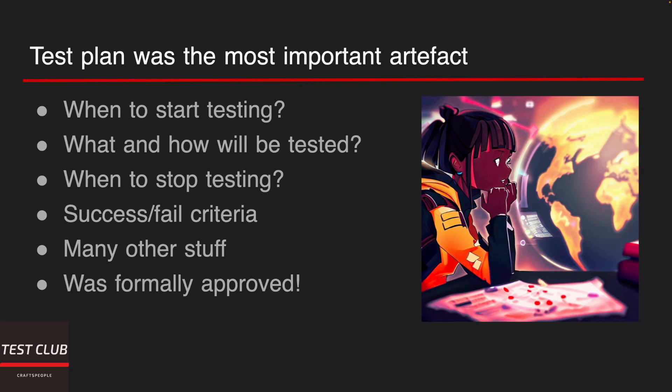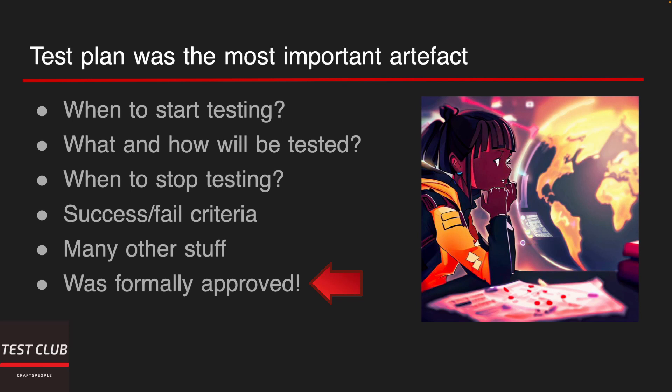And finally, bug reports — we can call them local scope documents because they showed a particular, very specific problem with your software. The test plan was the most important artifact of all, except probably test results reports and bug reports. That's because the test plan would identify when testing is going to start, what and how is going to be tested, when testing is going to stop, and what are the success and fail criteria for the whole product or sub-module. Moreover, the test plan in this old world would be formally approved by people like the test manager, development lead, project manager, and sometimes others.